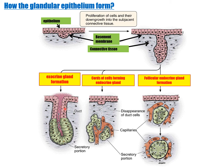If a duct is present, the gland is exocrine. If there is disappearance of the duct, cords of cells forming the gland with surrounding capillaries — this type is called an endocrine gland. This is how glandular epithelium is formed.